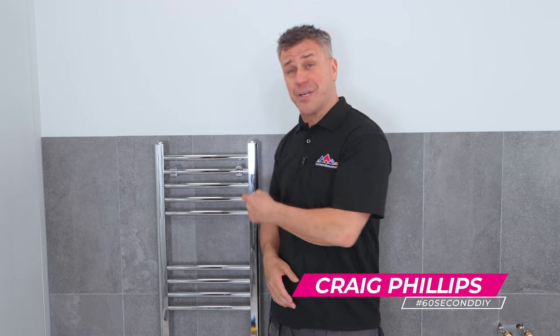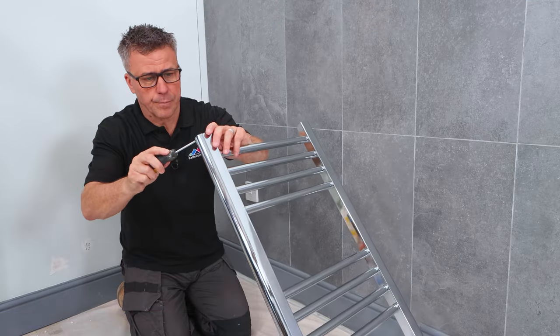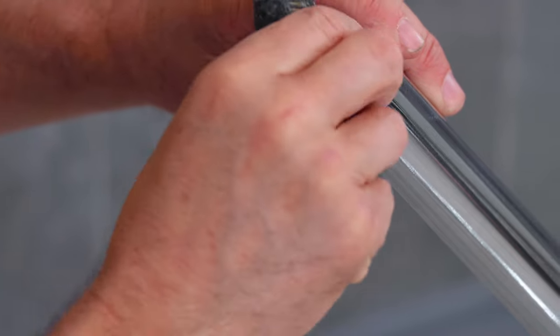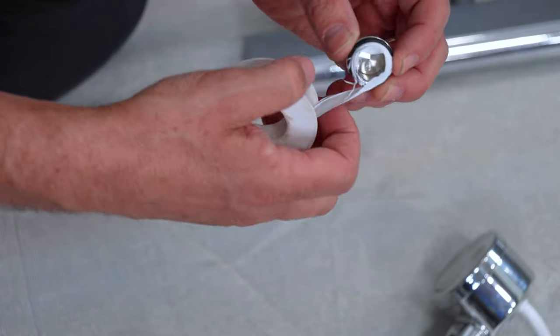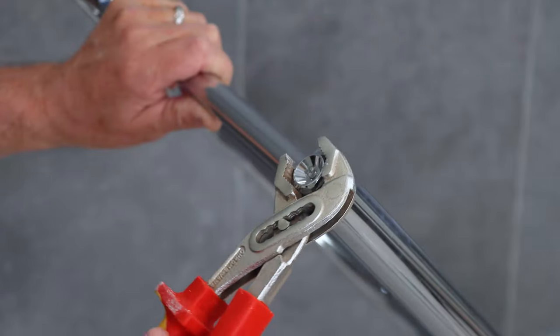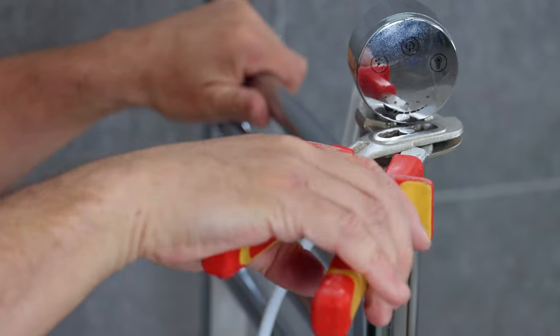I'm going to show you how to install this electric towel rail. Start with a screwdriver to remove the four plastic bungs from each corner. Apply some PTF tape on the thread around the blanking plugs and then slowly tighten these up by hand.